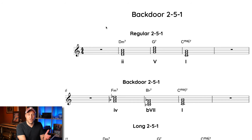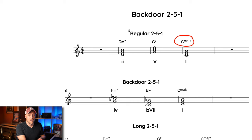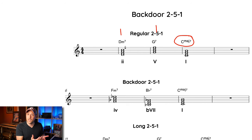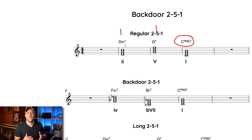First, let's review what a regular 2-5-1 is. The regular 2-5-1 is the two chord, the five chord, and the one chord of a key. In this case the one is C major. So the two chord is D and the five chord is G. Using the notes of the key of C major, the two chord becomes D minor seven and the five chord is G dominant seven — those are the chords of a major 2-5-1 in C major. If you don't know what that is, I highly recommend checking out some of my other videos about 2-5-1s first.